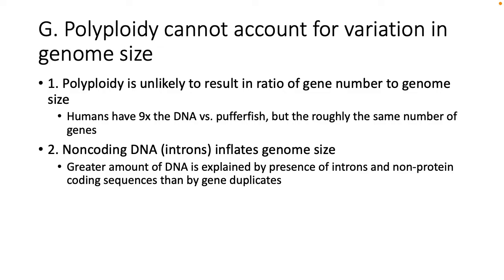Polyploidy does not account for variation in genome size. Humans have nine times the DNA versus puffer fish, but roughly the same number of genes. Non-coding DNA — introns — inflates the genome size. We have a lot of non-coding DNA introns that get spliced out when mRNA is made, so maybe that's why we have a greater amount of DNA — we have more introns than another organism.